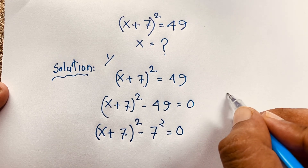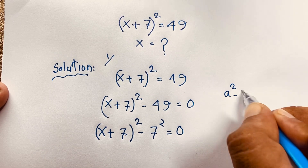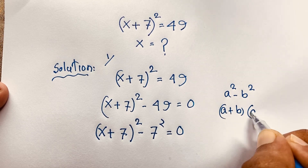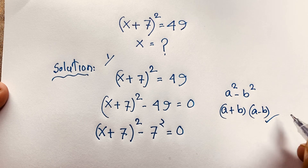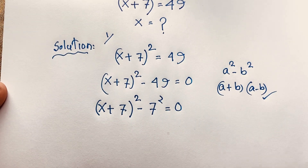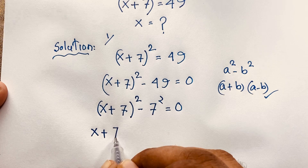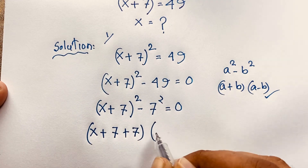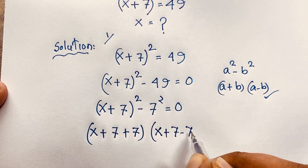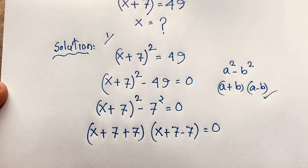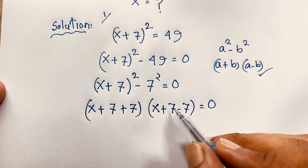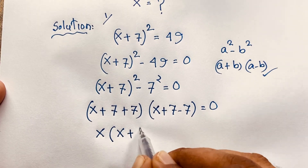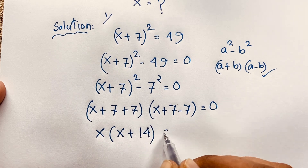Now we are applying the formula a² minus b² equals (a + b)(a - b). If I apply this formula here, it will be (x + 7 + 7)(x + 7 - 7) = 0. The 7s cancel out, giving x, so it becomes x(x + 14) = 0.